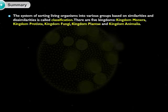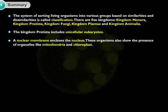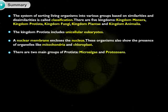The system of sorting living organisms into various groups based on similarities and dissimilarities is called classification. There are five kingdoms: Kingdom Monera, Kingdom Protista, Kingdom Fungi, Kingdom Plantae, and Kingdom Animalia. The Kingdom Protista includes unicellular eukaryotes. A nuclear membrane encloses the nucleus. These organisms also show the presence of organelles like mitochondria and chloroplasts. There are two main groups of Protista: microalgae and protozoans.